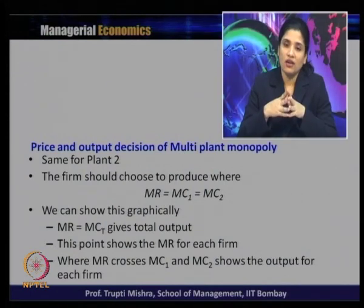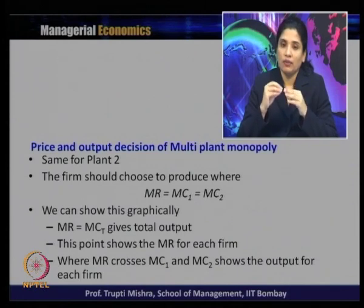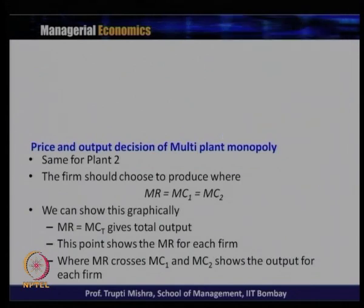The firm should choose to produce where MR equals MC1 and MR equals MC2. Graphically, the intersection of MR and the respective marginal cost curves gives the output for each plant. The equilibrium quantity and price are decided on the basis of total revenue and total cost of both plants. How much to produce in each plant follows from MR = MC1 for Plant 1 and MR = MC2 for Plant 2, following the marginalist rule.